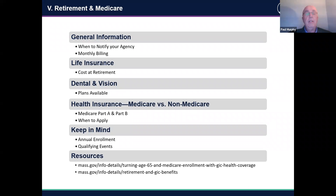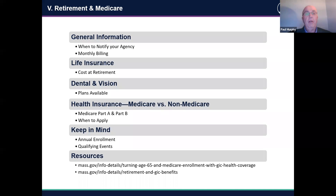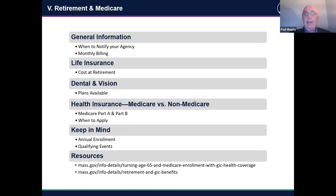When you retire, you can decrease your life insurance coverage at retirement or any time throughout the year. GIC does send you notifications when the premium is going to change so you know what the new premium will be as you get older. If you want to look at that life insurance, many people have a surprise when they open the bill and see the cost of life insurance. It's not necessary to keep it — you can cancel it any time throughout the year or after retirement.